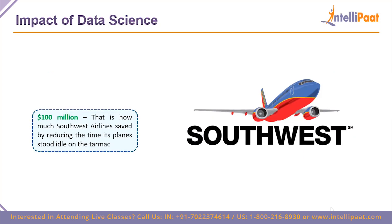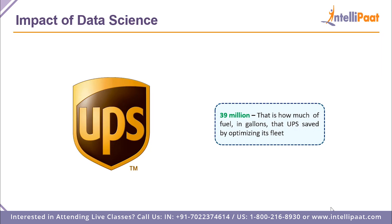Southwest Airlines saved 100 million dollars by analyzing how long their planes waited with engines on before takeoff. UPS saved 39 million gallons of fuel by optimizing their package delivery routes — they analyzed and rerouted more efficiently to understand how they could better deliver packages. These are powerful real-world examples of data science driving major savings.